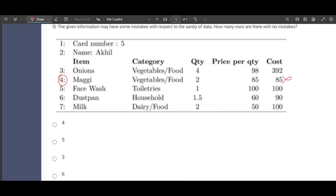Let me highlight only the mistakes with red pen. 2 into 85 is not 85, it is 170. So line number 4 is a mistake. Face wash toiletries, this is also perfect. 1 into 100 is 100, even the category also good. Dustpan, it is 1.5, it cannot be 1.5. It can be only one, two, three, so on. So therefore this is also a mistake.